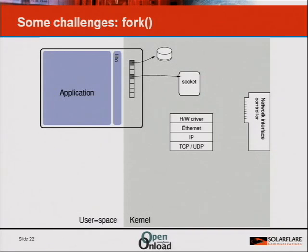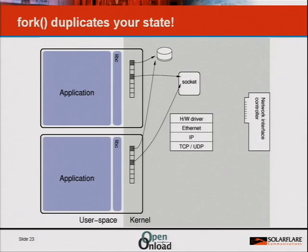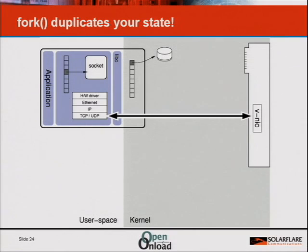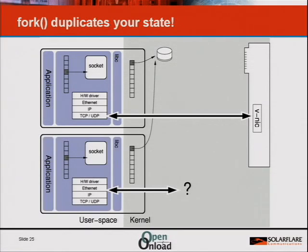Another interesting one is fork. Fork makes two copies of your process. Everything at user level is duplicated, everything in the kernel is duplicated, but you don't have two sockets and two files — you have two references to those sockets and files. In the kernel model they can share or close them, which is supported behavior. But in the trivial user-level implementation we now have two copies of the socket and two copies of the protocol state. The direct connection to the VNIC probably points to the same place if you have a shared mapping, so you've got two people trying to use the same hardware without coordinating — clearly that's not going to work.